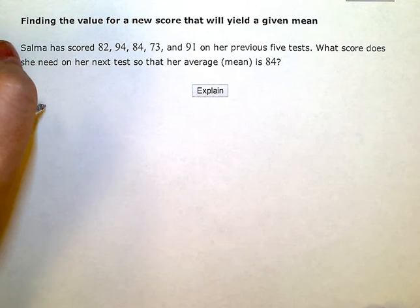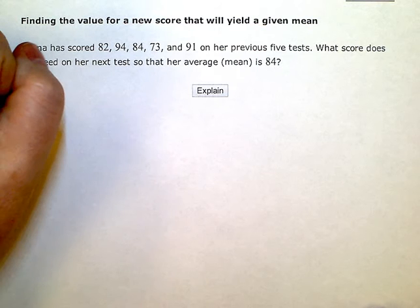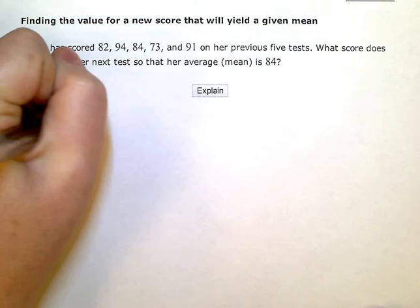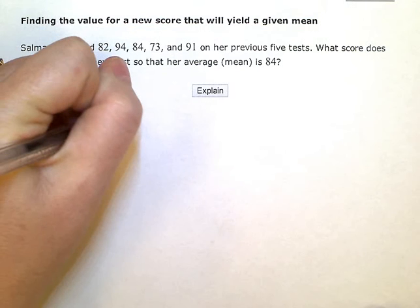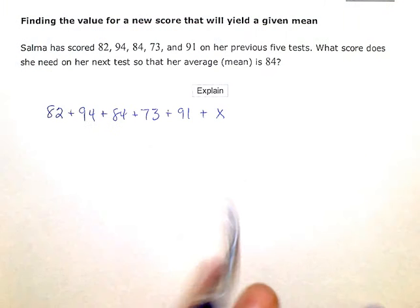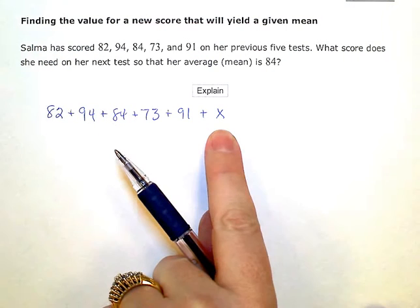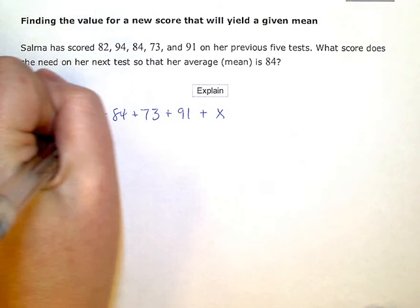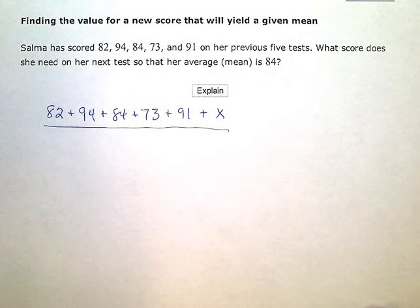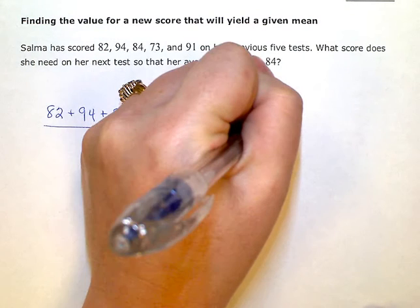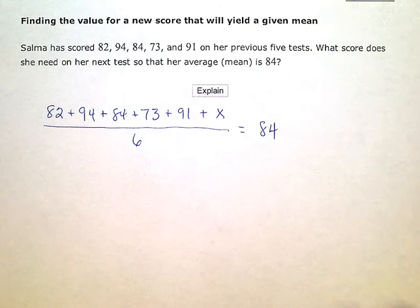And to find the average, I would add those up. So 82 plus 94 plus 84 plus 73 plus 91 plus, I'm going to put X for this new test that we don't know yet. That's what we're trying to figure out. But if I wanted the average of those six tests, after I added it up, I would divide by six. And I want the average to be 84. So I'm just setting up an equation here.